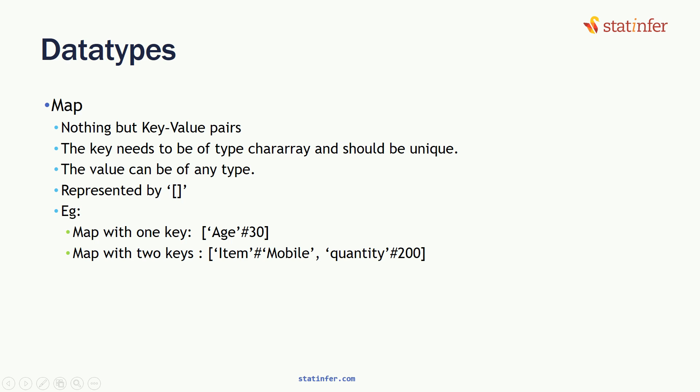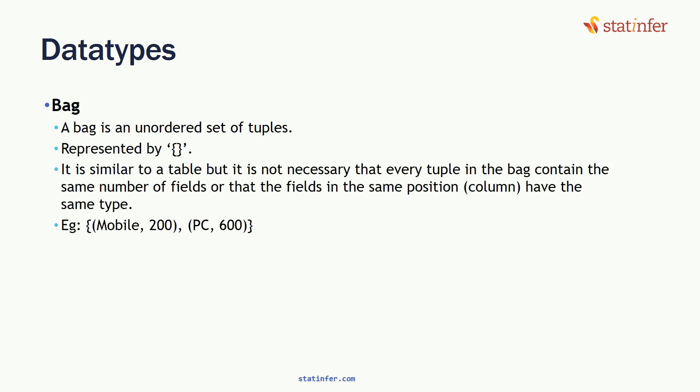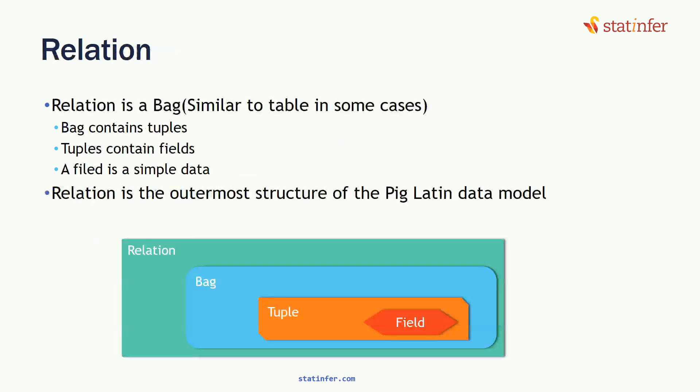We have seen tuples — like rows — and bags — like tables. There is one more data type: relation. Pig works with a lot of relations. A relation is also a bag, and a bag is a collection of tuples. So a relation is similar to a table — relation is a bag, bag contains tuples, and a tuple is like a row. Tuples contain fields, and a field is a simple data value.